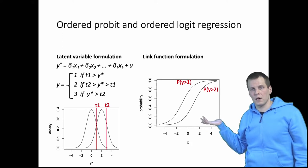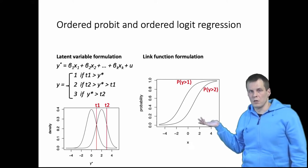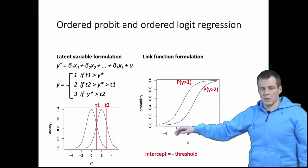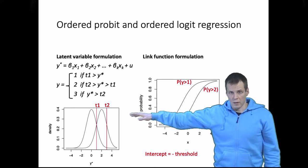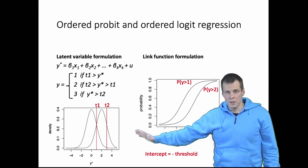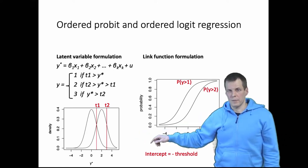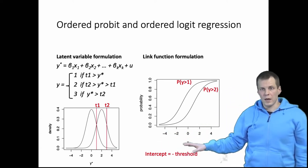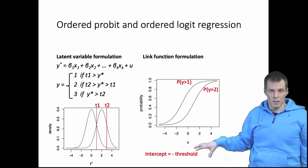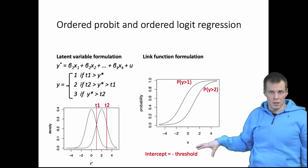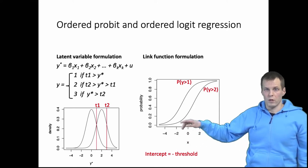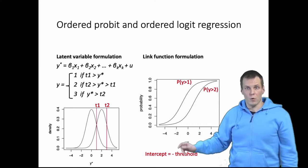What is the relationship between the link function formulation and the latent variable formulation? It turns out that the thresholds in the latent variable formulation are the negative of the intercepts. So if a threshold is large, that means the intercept must be negative. The practical implication is that when you interpret your regression results for ordered models from your statistical software, you have to understand whether the software presents you the intercepts or the thresholds when you calculate the probabilities.